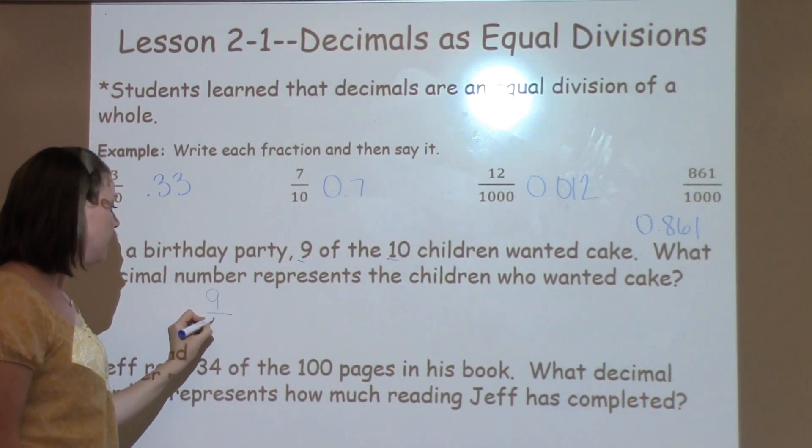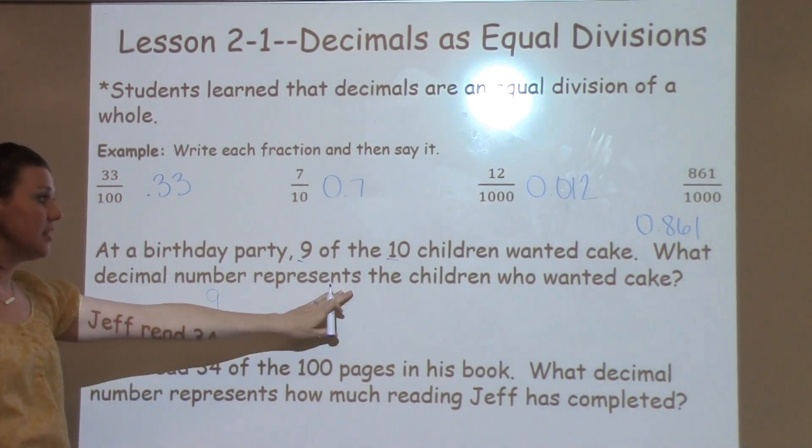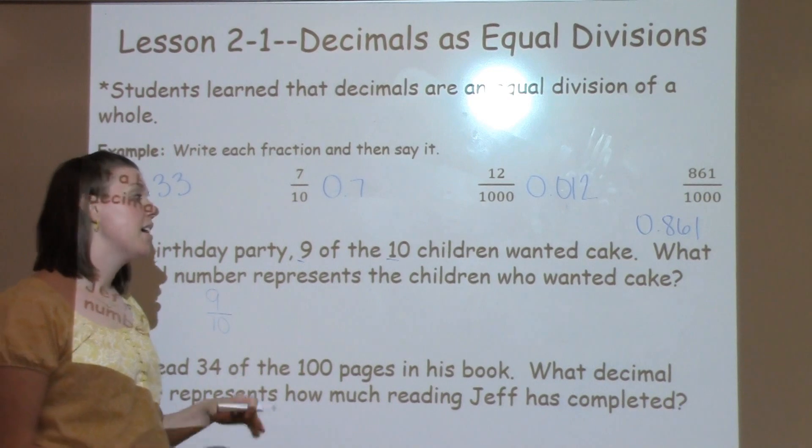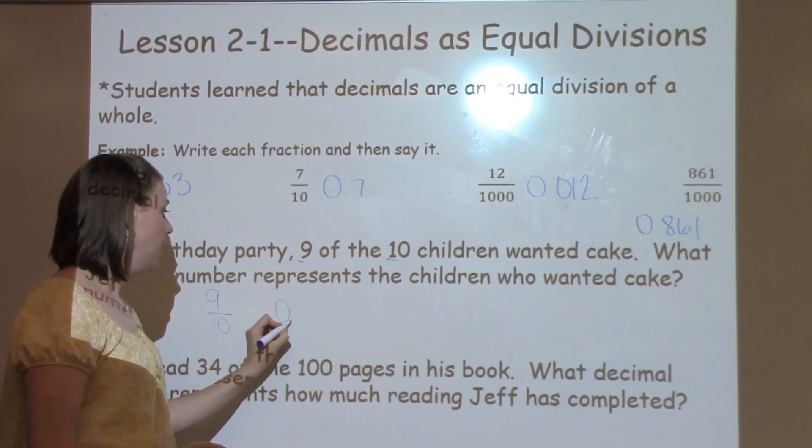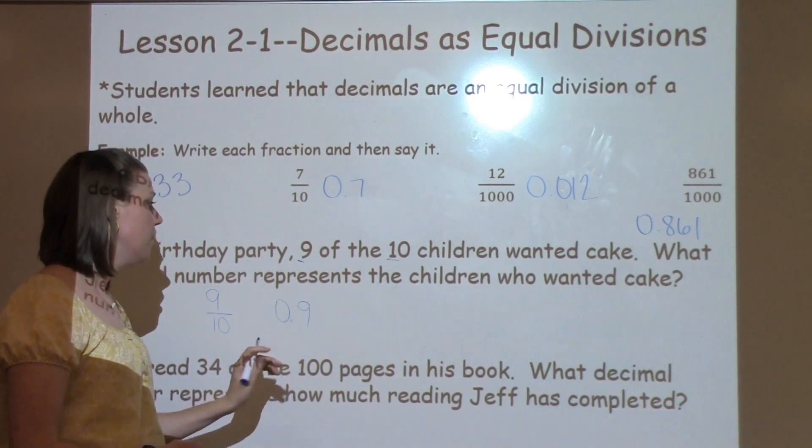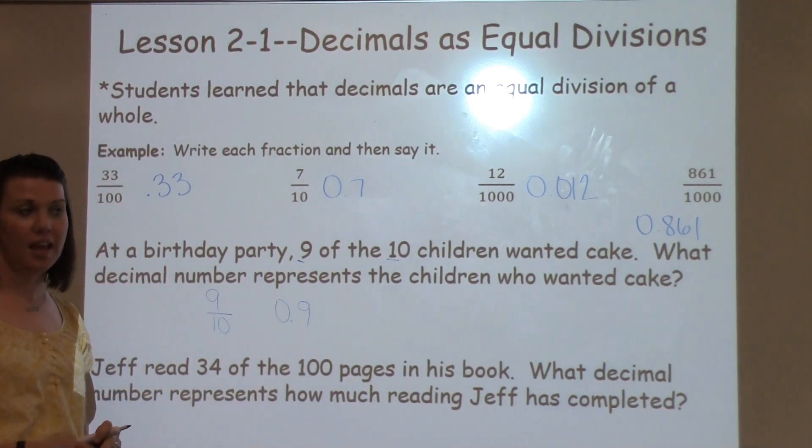9 out of 10. Now I'm going to write that as a decimal. I'm going to write it just like it sounds, 9 out of 10. So I'm going to write 0 and put my 9 in my tenths spot. So 9 tenths of the children wanted cake.